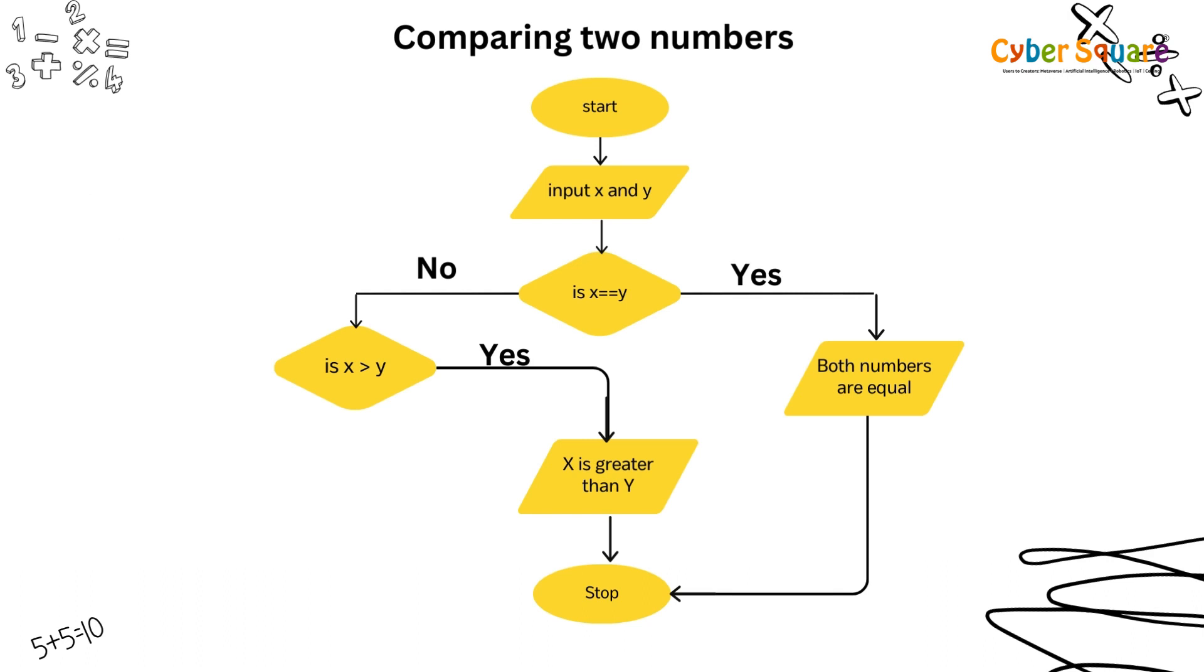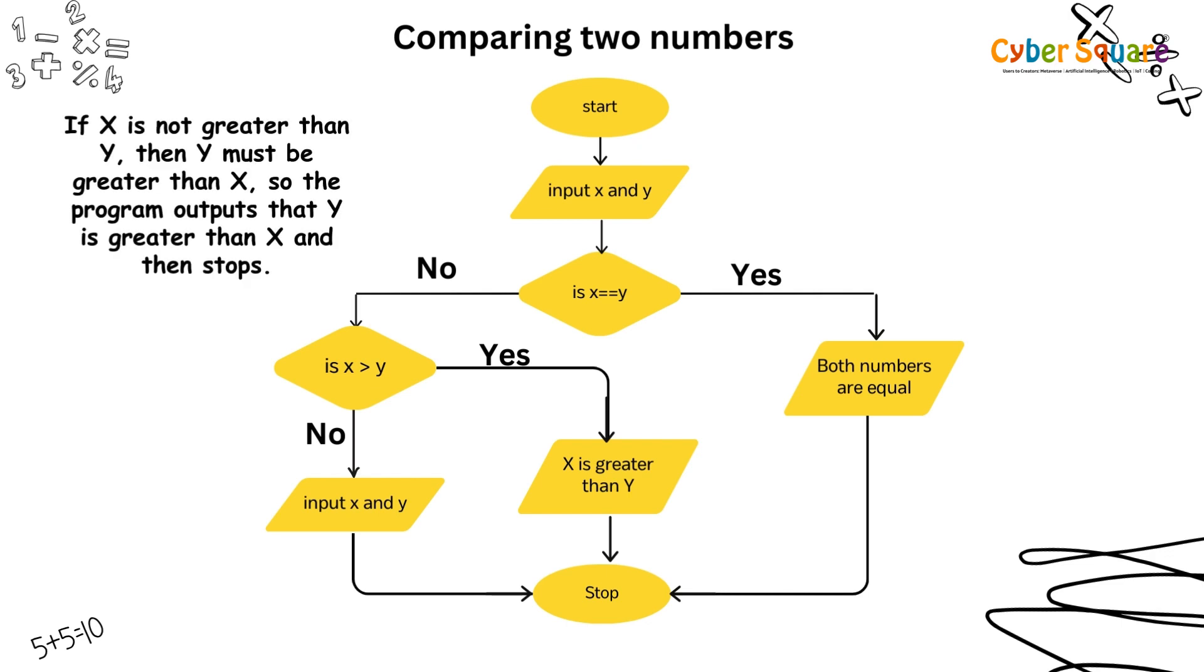If x is not greater than y, then y must be greater than x, so the program outputs that y is greater than x and then stops.